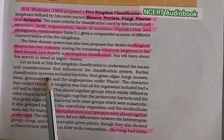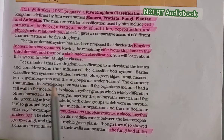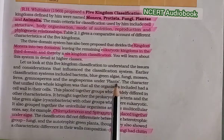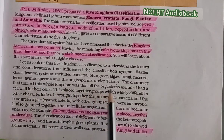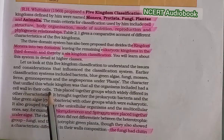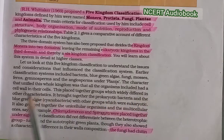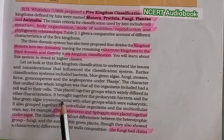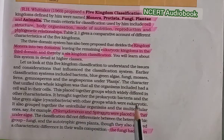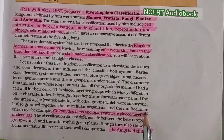Our earlier classification system included bacteria, blue-green algae, fungi, mosses, ferns, gymnosperms and angiosperms under plants. The character that united this whole kingdom was that all organisms included had a cell wall in their cells. This placed together groups which were widely different in other characteristics — it brought together the prokaryotic bacteria and the blue-green algae (cyanobacteria) with other groups which were eukaryotic, and also grouped together unicellular and multicellular organisms.